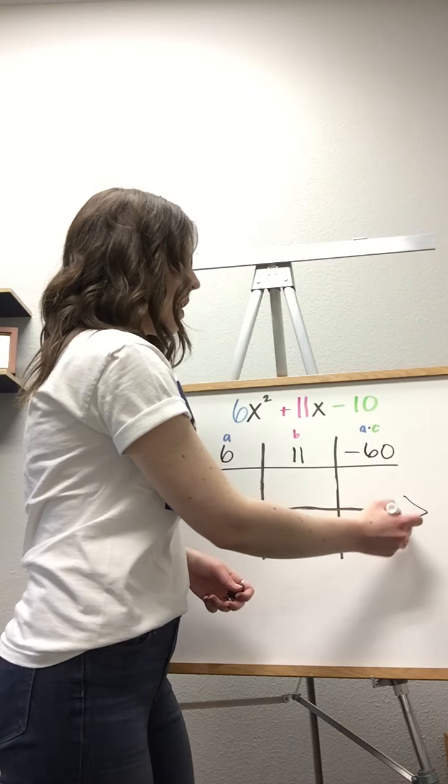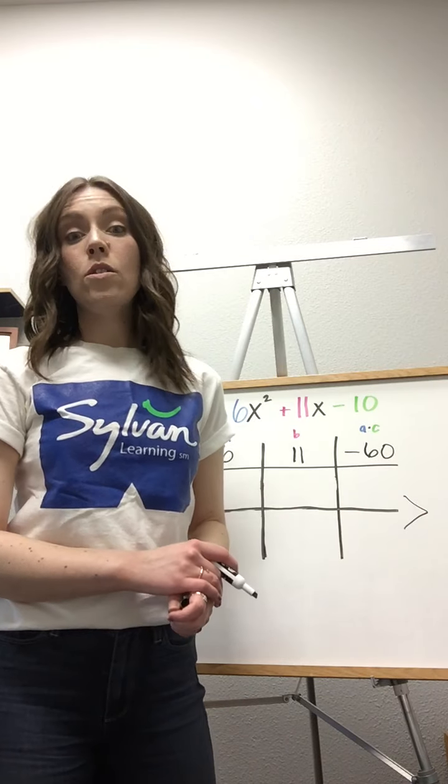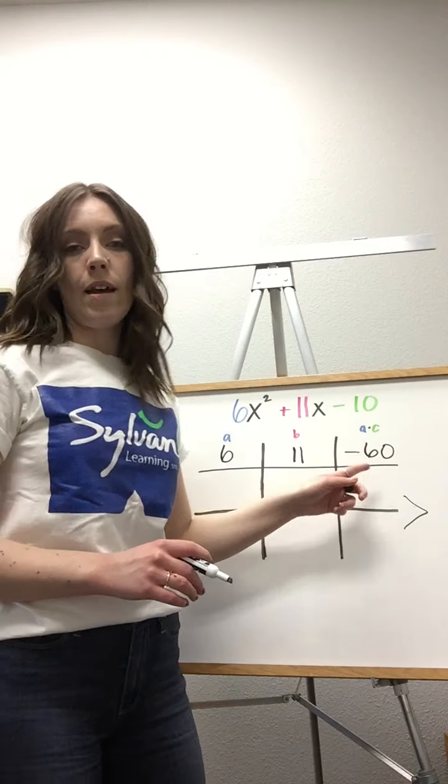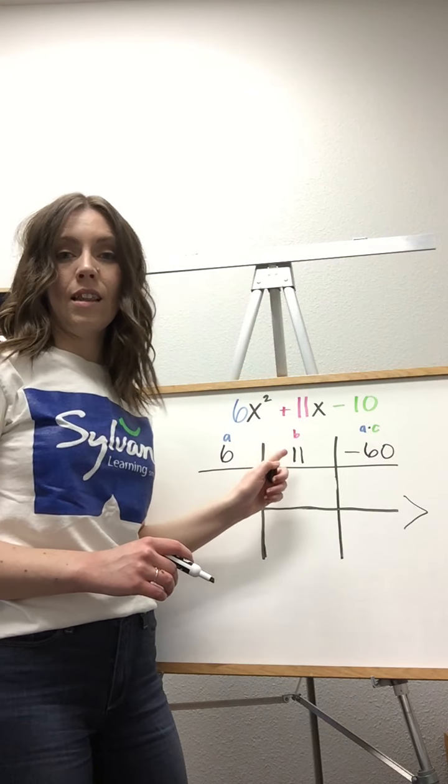Now our next step is to focus on these two boxes, and we want to find two numbers that multiply to give us negative 60, but that add to give us 11.